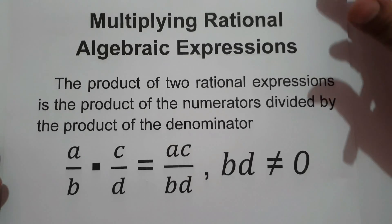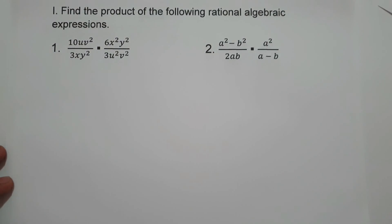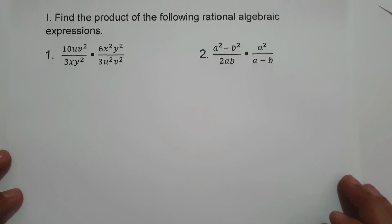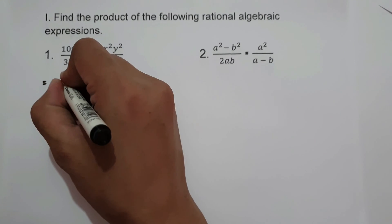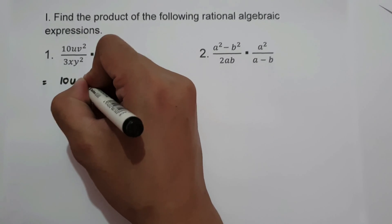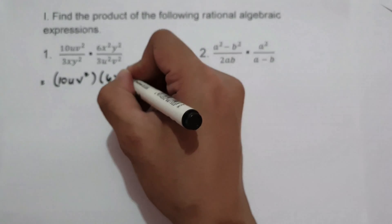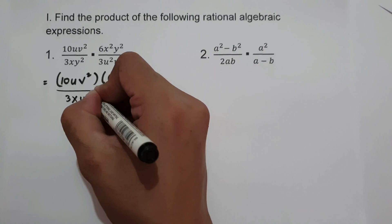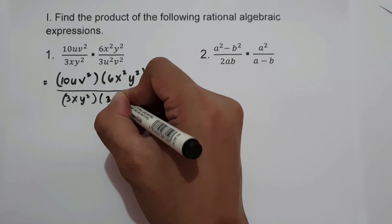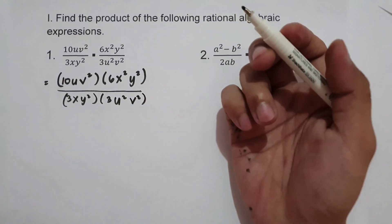Let's start multiplying algebraic expressions. On number one, we have 10uv² over 3xy² times 6x²y² over 3u²v². The rule in multiplying rational algebraic expressions is we simply multiply numerator to numerator and denominator to denominator. So let's have 10uv² times 6x²y² over 3xy² times 3u²v².